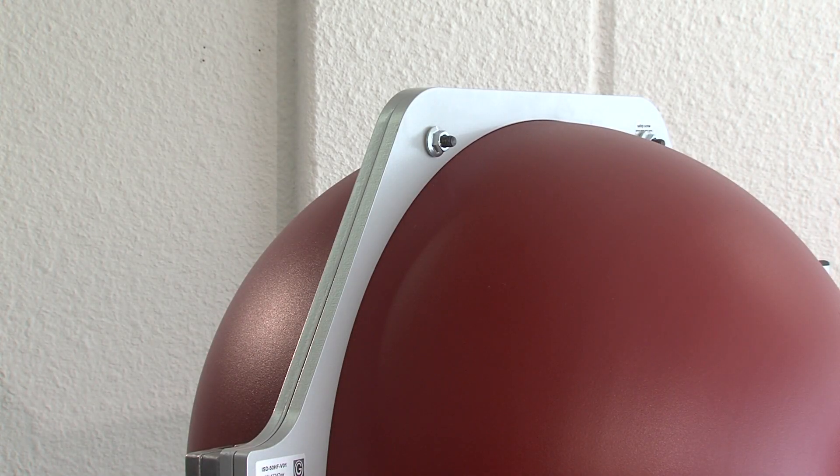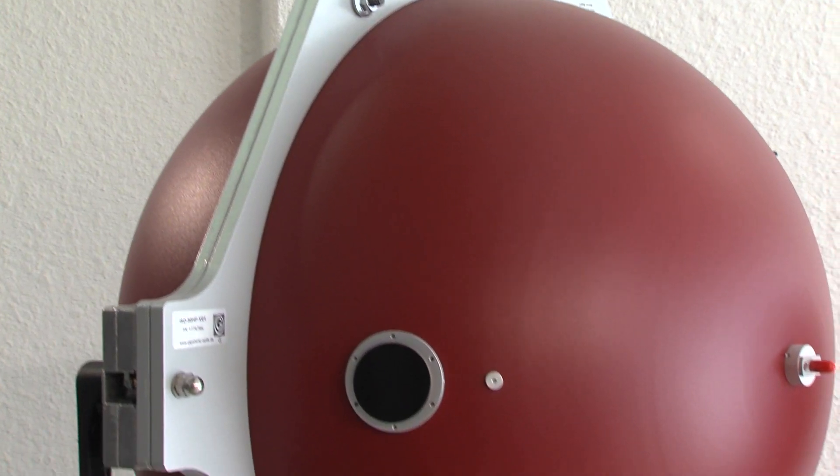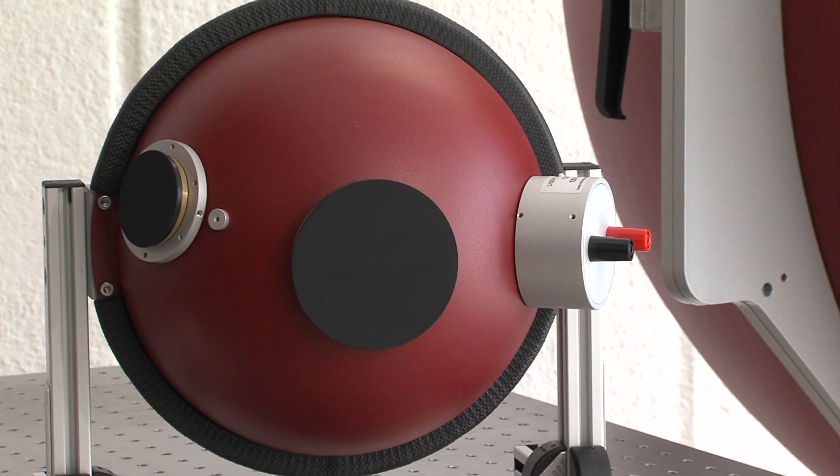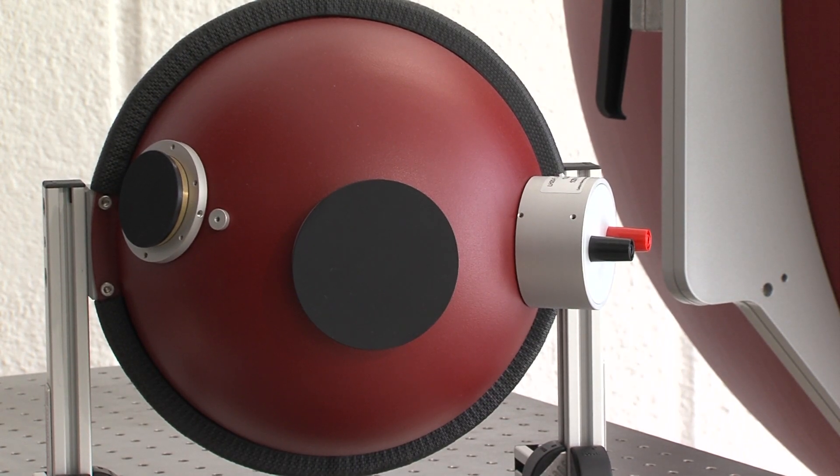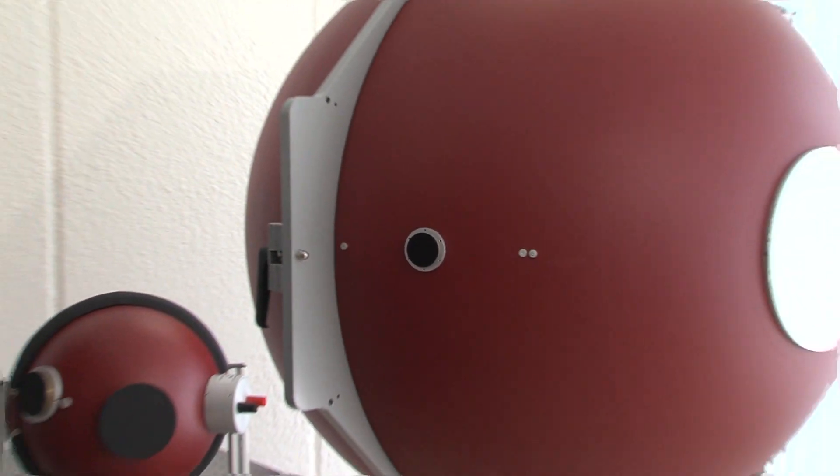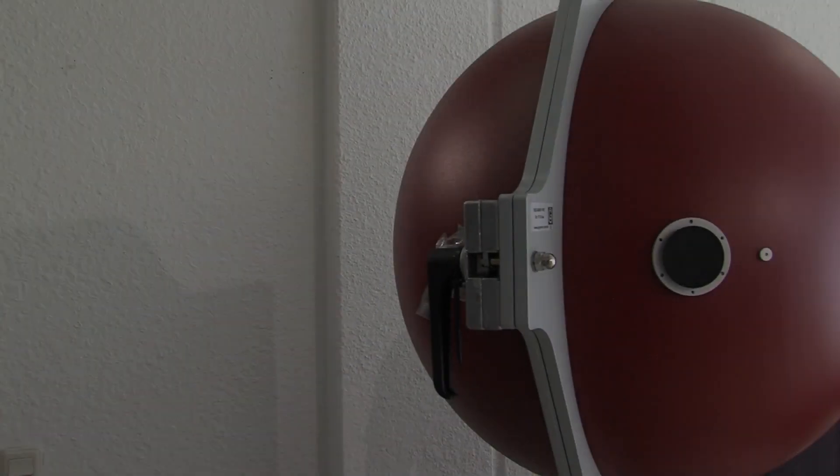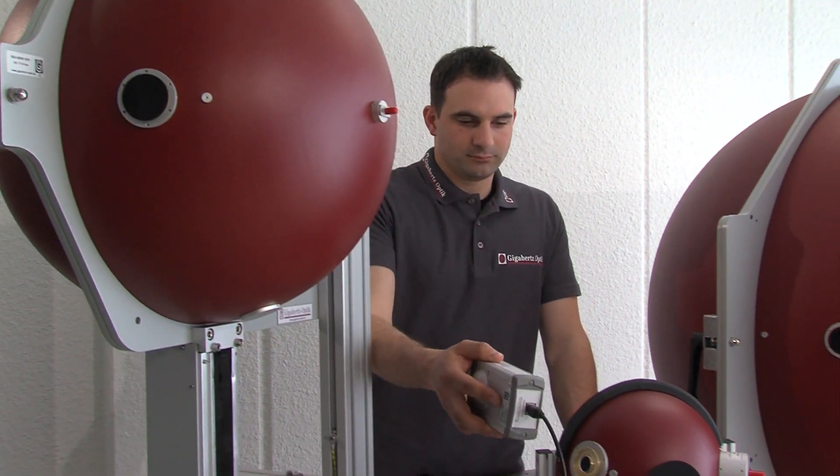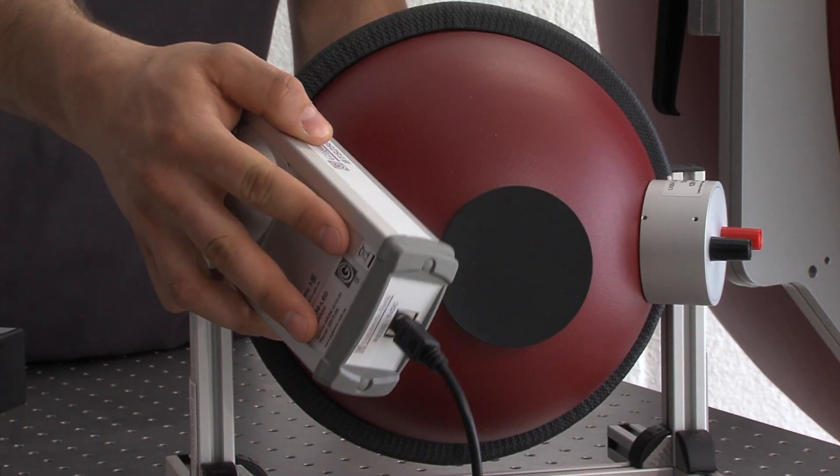To measure luminous flux of larger size LED lamps and fixtures, the LED Tester can be combined with large diameter integrating spheres. Gigahertz Optic makes integrating spheres for the LED Tester from 21 to 100 centimeters in diameter. The mating bayonet type mount on the integrating sphere makes attaching the LED Tester simple and secure.